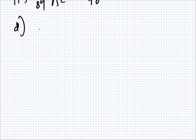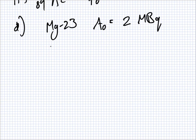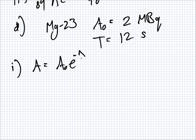A sample of magnesium 23. Magnesium 23 has an initial activity of 2 megabecquerels and a half life of 12 seconds. That's all the info? Yes. Question number one: determine the activity of the sample after 60 seconds. So that's A0 e minus lambda t. So we should work out the lambda. What's the formula for lambda? 0.693 over T half. Yes.